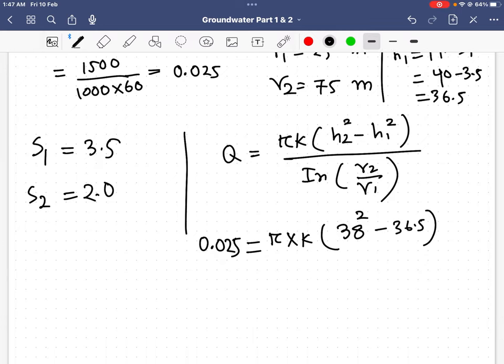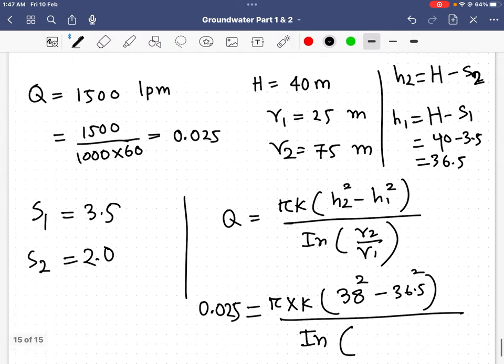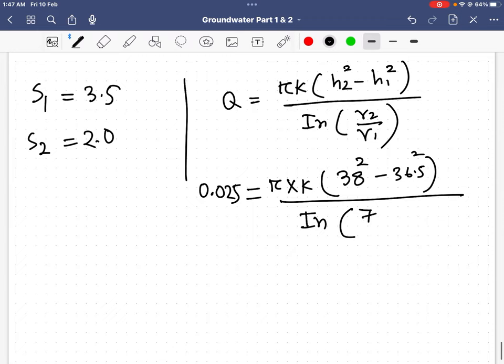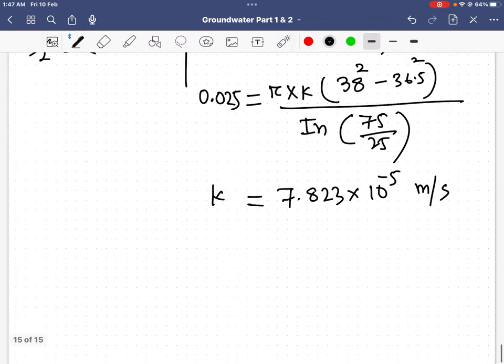So I write 38 squared and 36.5 squared, divide it by ln(75 divided by 25). If I calculate, I will get my K equals 7.823 times 10 to the power negative 5 meters per second.